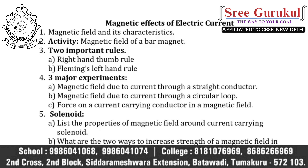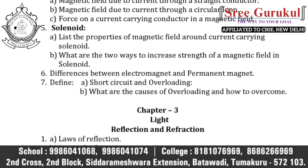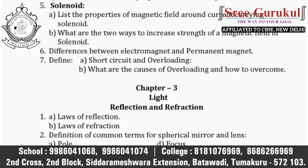In this chapter, three major experiments we are doing. First: magnetic field due to current through a straight conductor. Second: magnetic field due to current through a circular loop. Third: force on a current carrying conductor in a magnetic field. Among these three experiments, you can expect any one in your board exam 100%. Next concept is solenoid — most frequently rising question. For example, list the properties of magnetic field around a current carrying solenoid, or what are the two ways to increase the strength of magnetic field in a solenoid. Next: differences between electromagnet and permanent magnet. Most frequently asked: define short circuit and overloading, and what are the causes of overloading and how to overcome?